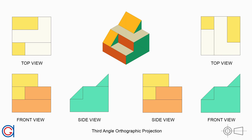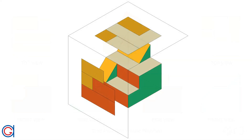Hello, today we are going to learn about third angle orthographic projection, which is mainly used in North and South America, and also in Australia and the United Kingdom. In this system the object is located in the third quadrant, so the horizontal plane of projection is above the object. The position of the vertical plane of projection is in front of the object. In this method, what you see from the left you draw on the left, what you see from the right you draw on the right, and what you see from above you draw above.